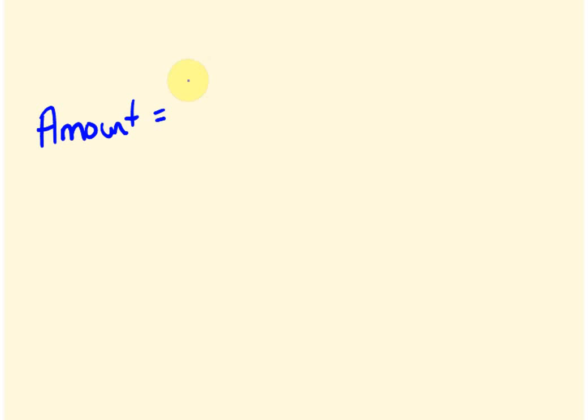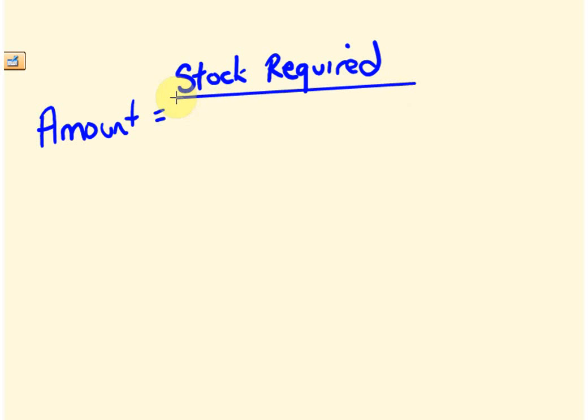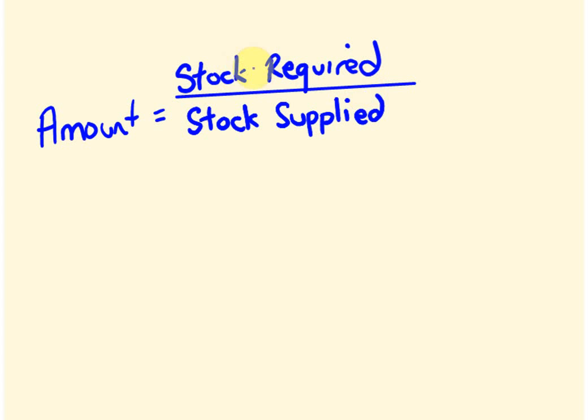This is the first video in this series, and this is probably the most important formula you'll get as far as drug calculations go. The amount of a drug is based upon a few things. First, the stock required — that's the amount of the drug which has actually been ordered for the patient. We also base it on the stock supply — that's the actual strength of the drug you have on hand. We'll reconcile these two.